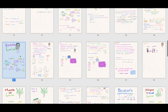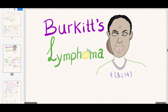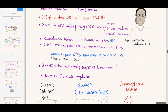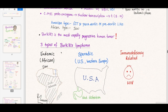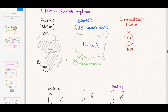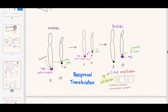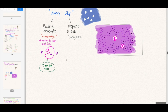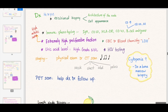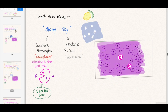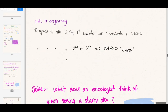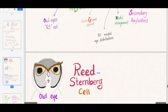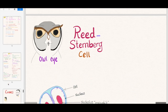Let me show you the Burkitt's lymphoma. You have the lymphoma and all the stuff you need to know. It's a non-Hodgkin's, Sub-Saharan Africa, with three subtypes: endemic, sporadic, or African and American. Then the clinical features — the starry sky appearance, how to diagnose, and here's the starry sky — the macrophage is the star. How to treat Burkitt's lymphoma, mantle cell lymphoma, some mnemonics, and the owl eye.